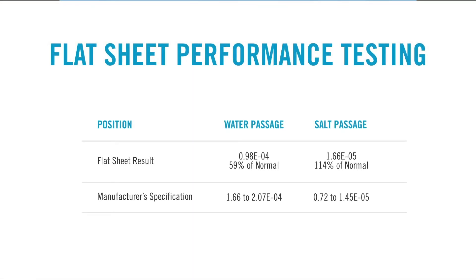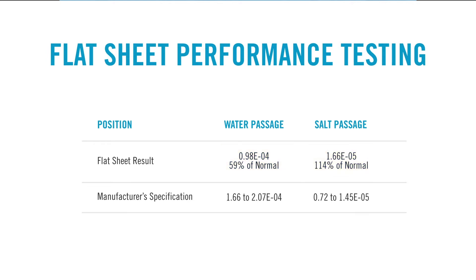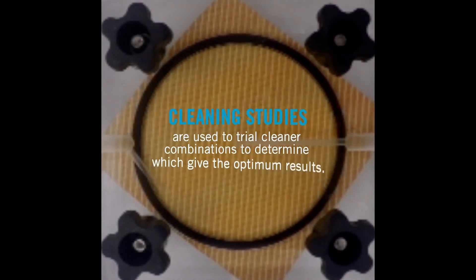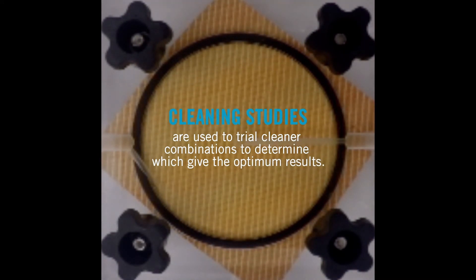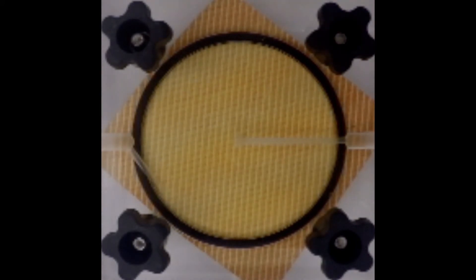Through our testing so far, we've pinpointed what the issue is, and now we want to see how that applies to the flat sheet performance. So we take these samples over to our cell tester. This cell tester allows us to determine the individual performance of these flat sheet samples. We'll see that the flat sheet samples have lower than normal water passage and higher than normal salt passage. This is consistent with our full element results, where we saw lower than normal flow and slightly lower than normal rejection. In these cell testers, we're able to trial many of our products to determine what's going to be the best for removing our foulant and also for restoring performance to these flat sheet samples.